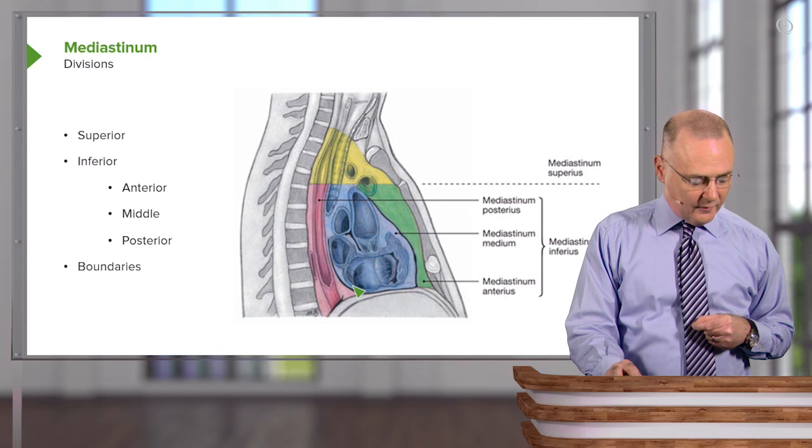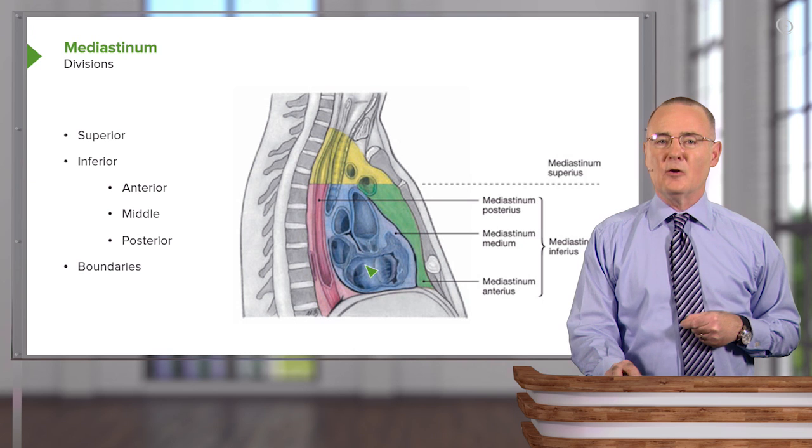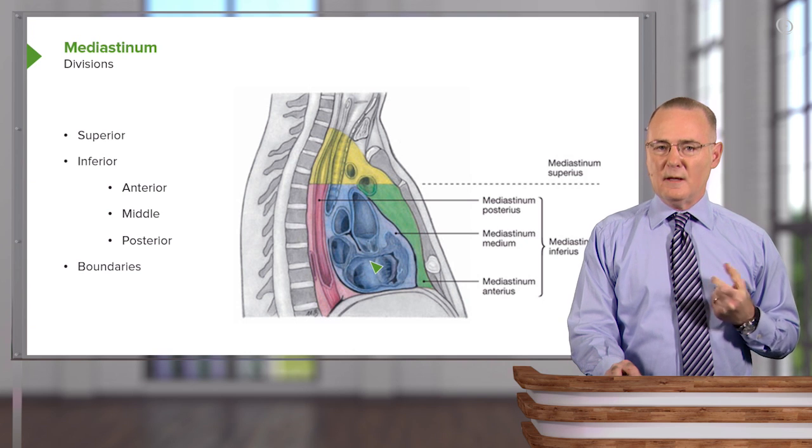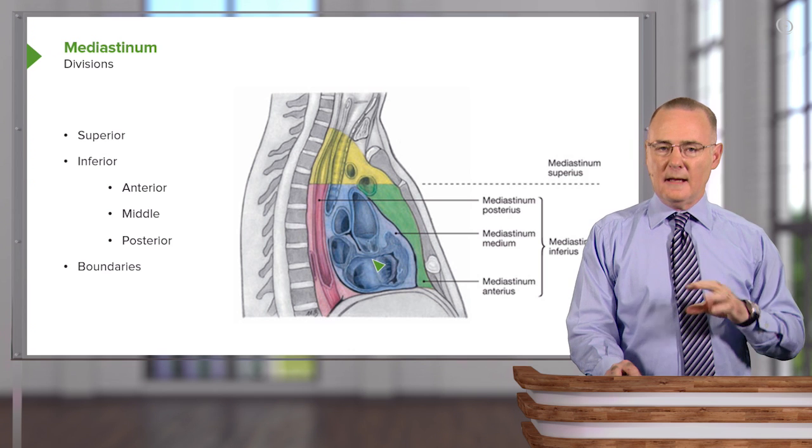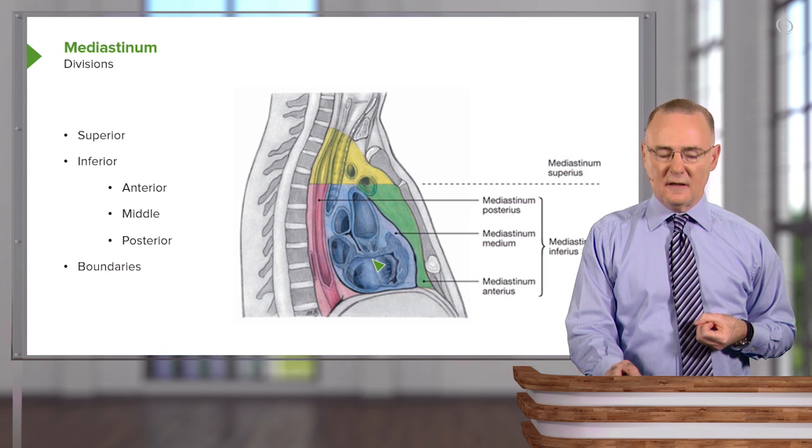Everything else then is going to be in the middle mediastinum, and your major occupant will be the pericardium and its attendant heart and great vessels.